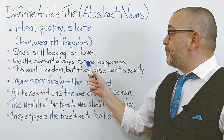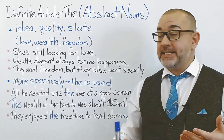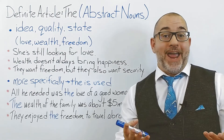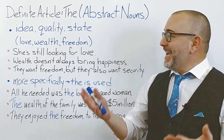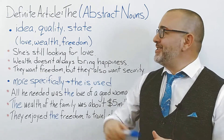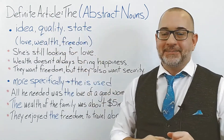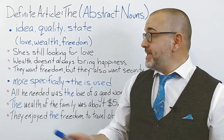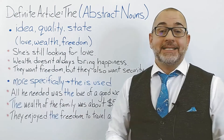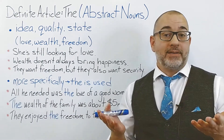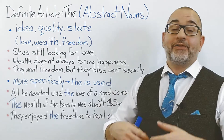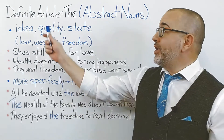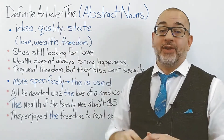Wealth doesn't always bring happiness. In this sentence, wealth is the abstract noun. Wealth from what? Wealth from where? Wealth from who? As it is an abstract noun, we're not using the definite article, 'the.' They want freedom, but they also want security. In this sentence, freedom is the abstract noun. Freedom from what? Freedom from who? Freedom to do what? We don't have these details. It's an abstract noun, so we are not using the definite article, 'the.'